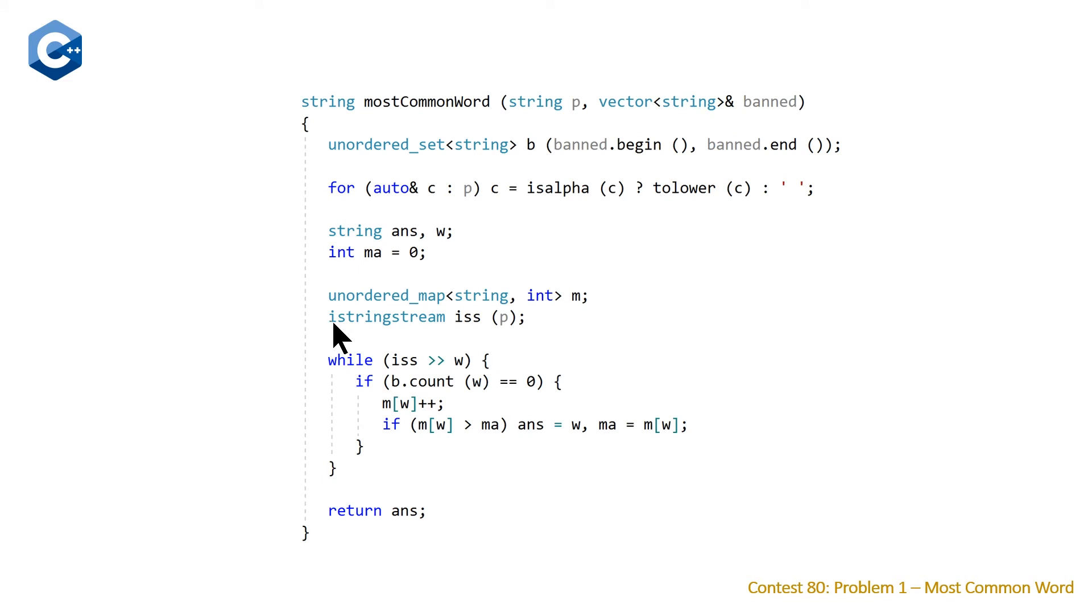We can just declare this iStringStream, iss, and give it the string paragraph p as its parameter. And then we can just do this while loop, and use the right angle operator, the input operator, and go iss, and then just declare a string w. And this is much, much simpler. So, already just doing those two things, avoiding the lambda and the erase remove idiom, and just using the is alpha function, and then making use of string stream, we've cleaned up our code a lot.